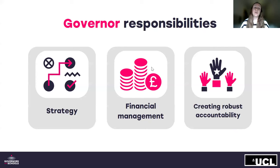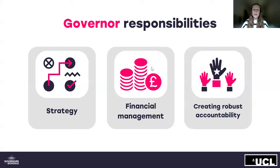Moving on to governor responsibilities. School governors enable their school to run effectively and provide excellent education for children. They have three core responsibilities: planning the strategic direction of the school so there's a clear vision in line with the school's ethos; overseeing the financial management of the school and ensuring its money is well spent and appropriately accounted for; and thirdly, holding senior leaders to account for the educational performance of the school and the outcomes of its pupils.